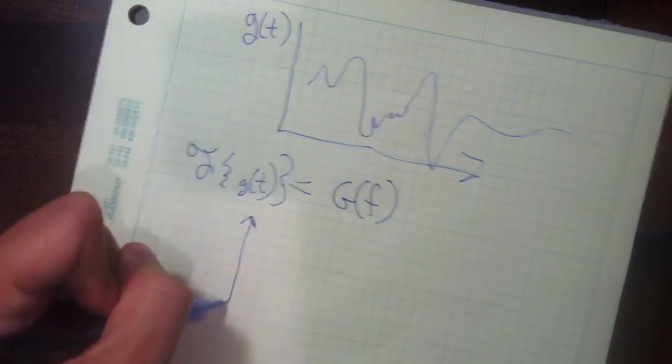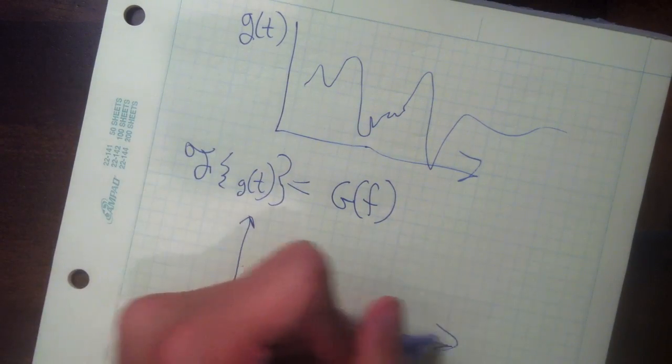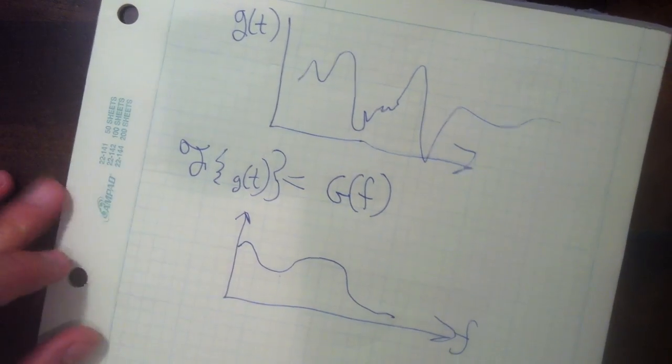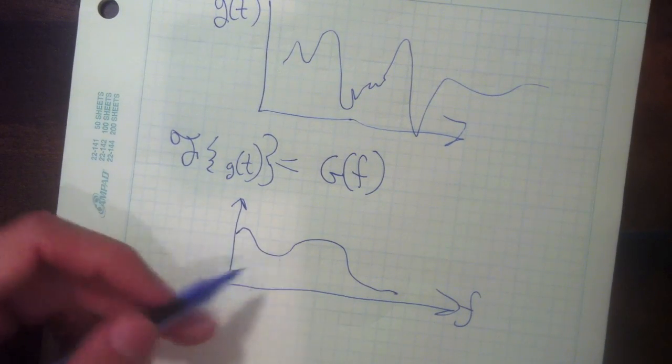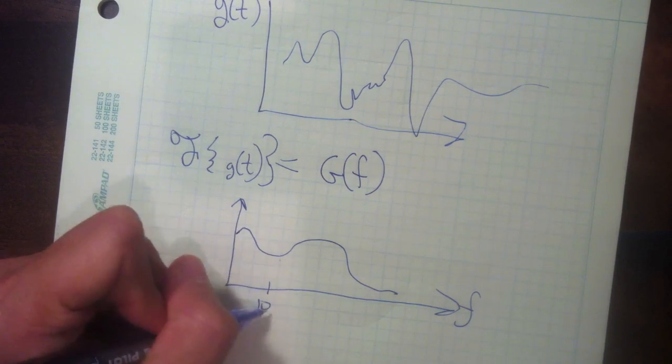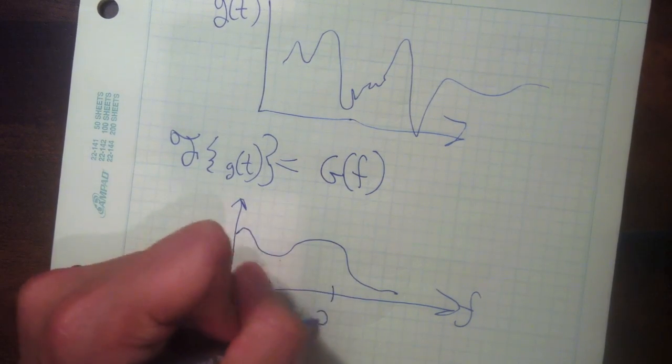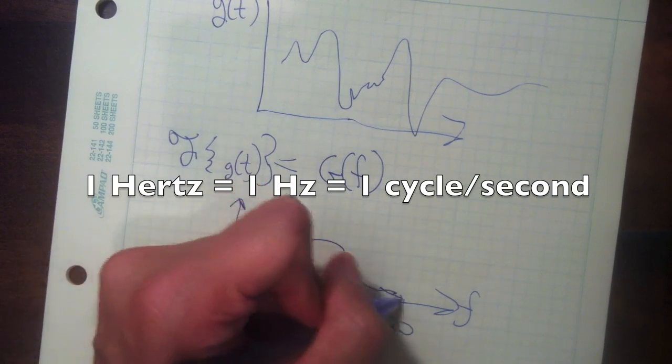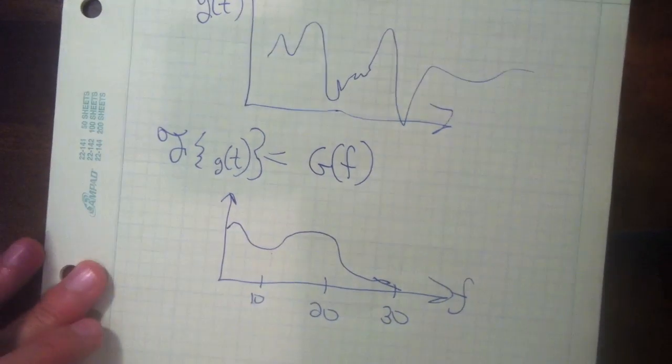And the Fourier transform takes this operation and returns a function G of F. And G of F might be some other function that might look like this. And this tells you where the energy is. So here might be 10 Hertz, here might be 20 and says, a lot of the energy is here and then above 30 Hertz, for instance, there's not much energy.